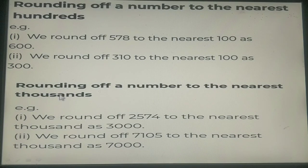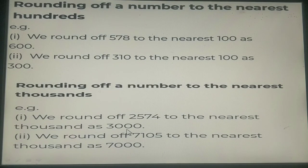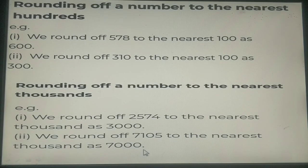Similarly rounding off to the nearest thousands. We would round off 2574 to the nearest thousands as 3000. And 7105 would be rounded off to 7000.